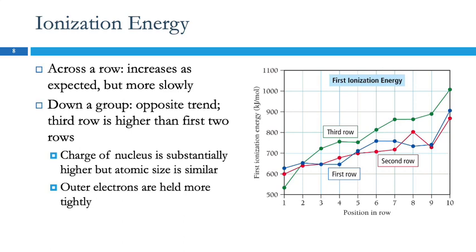Ionization energy increases across a row for the main group elements because atoms get smaller and it becomes harder to remove electrons. For transition metals there is a trend like that — ionization energy increases as we go across — but it's not as steep an increase as it is for the main group elements. Going down a group, we would expect ionization energy to get smaller as atoms get larger, but here we actually see the opposite trend.